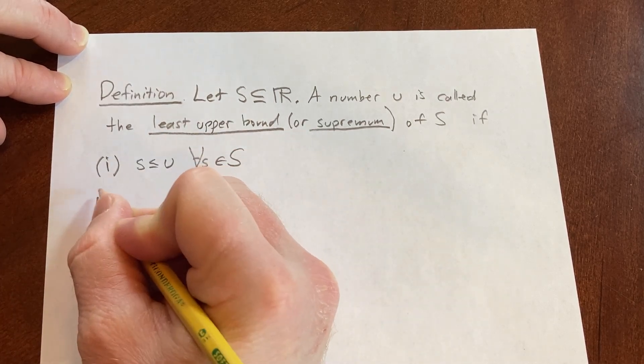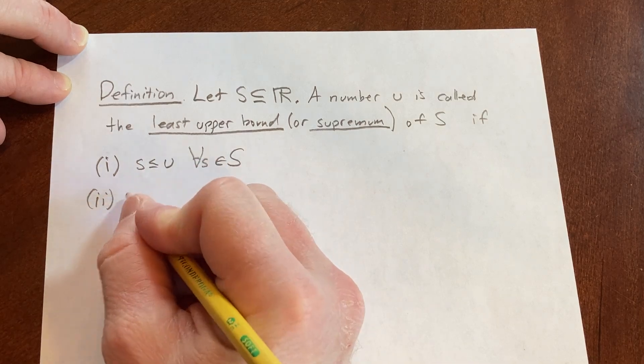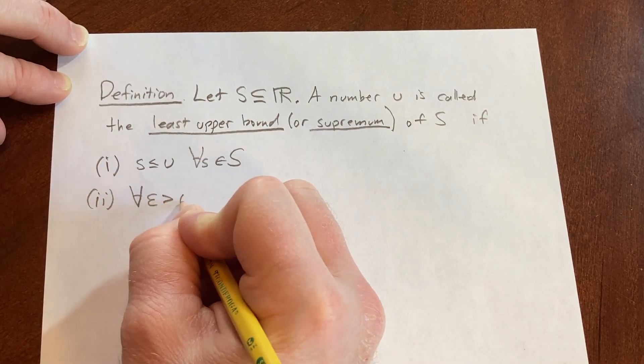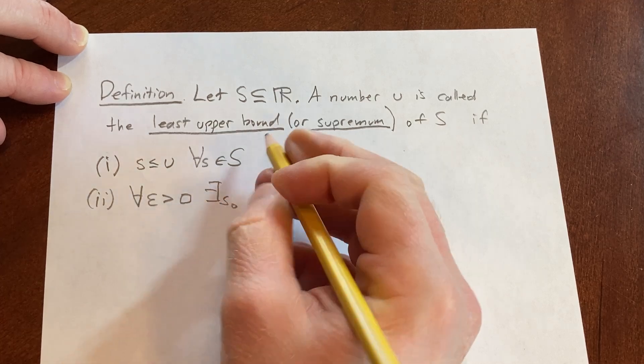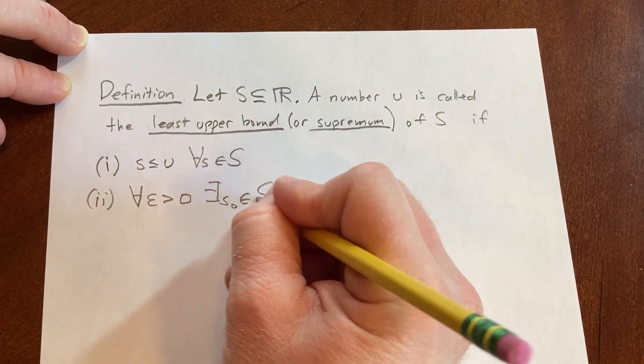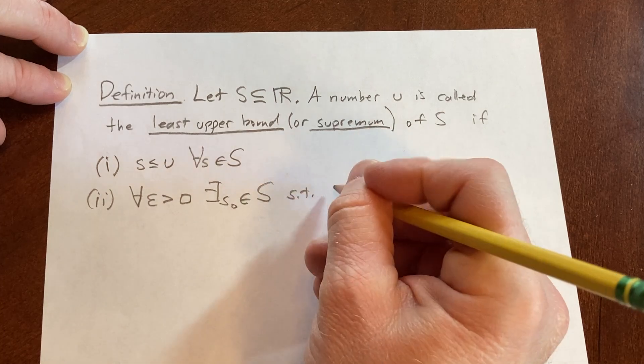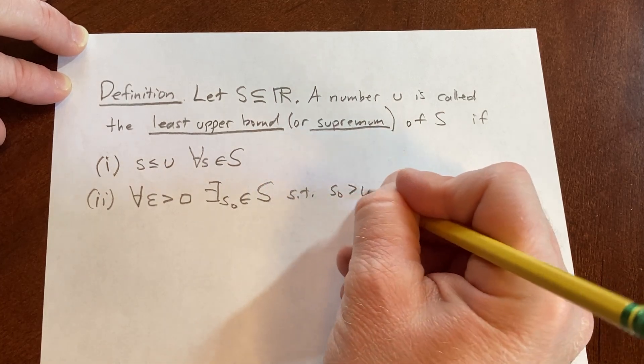And the second condition is that for all epsilon greater than 0, there exists some s0 in S such that s0 is greater than u minus epsilon.